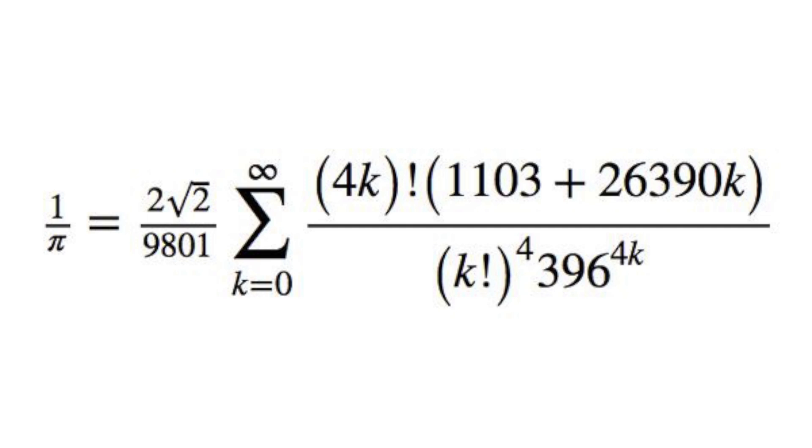Ramanujan was also able to create an infinite series that equals the value of pi. This precise series converges to pi more quickly than any other series at the time, and even today forms the basis for many algorithms that mathematicians use to discover more digits of pi.